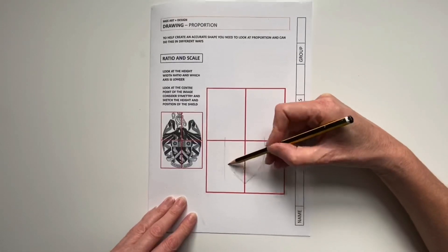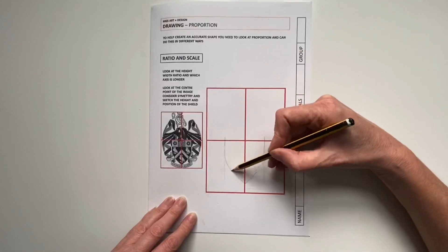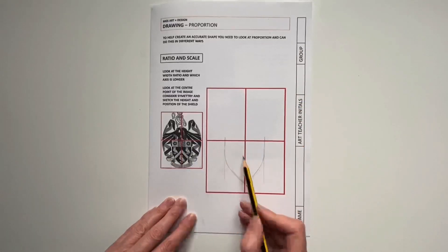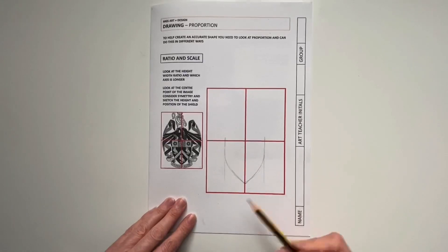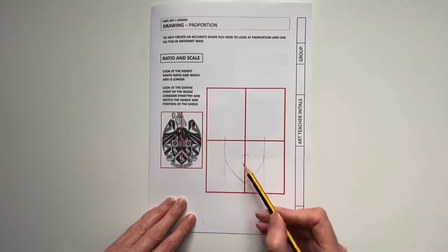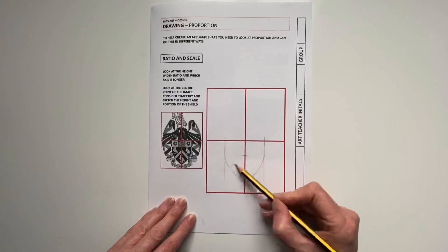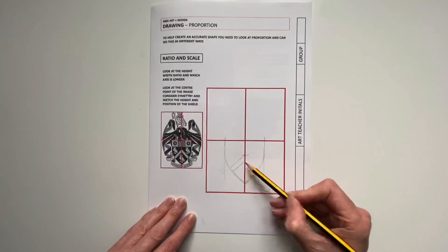Now the worksheet is only asking us to position the shield, but whilst you're waiting, if you've done that part of it, you might continue just to work on it and test yourself in developing your accuracy in your proportions.